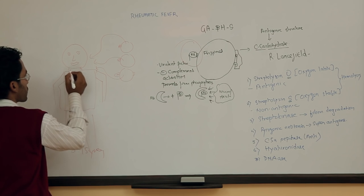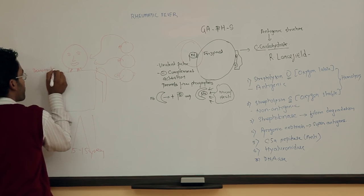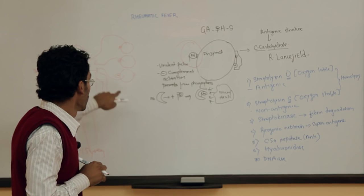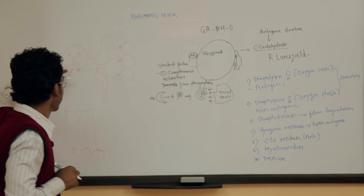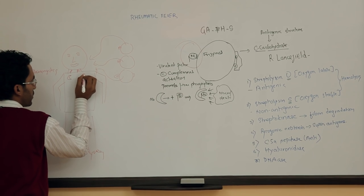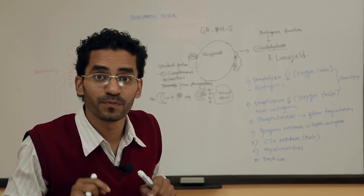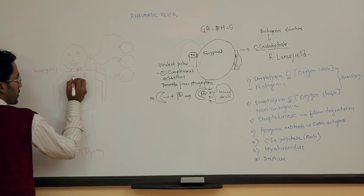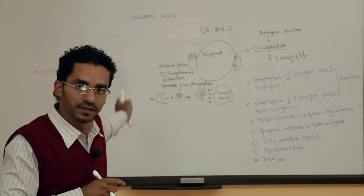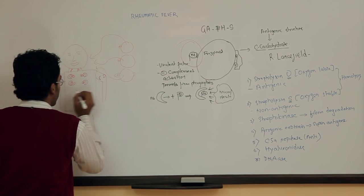When pharyngitis occurs, the body releases antibodies against M protein. These antibodies cause the destruction of the streptococci. After about three weeks, these antibodies travel everywhere in the body, acting like security guards searching for M protein throughout the whole body.